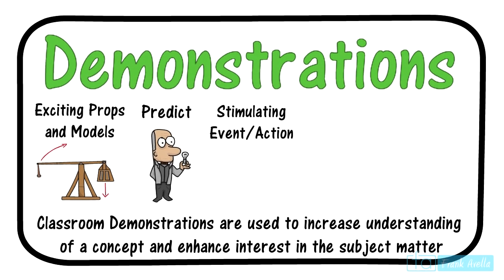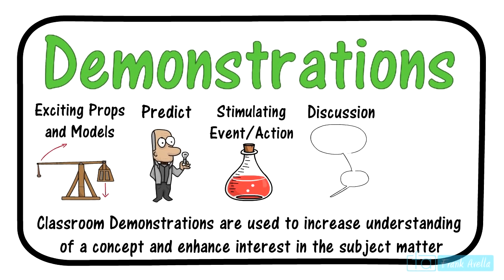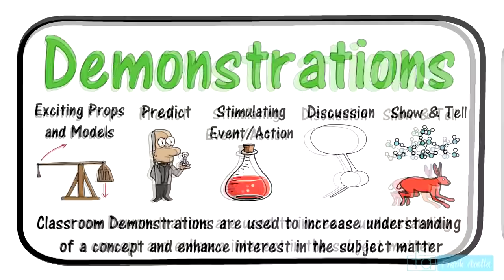There should be some sort of an action — an acid-based solution changing colors is an example, or something as easy as flying a paper airplane across the room. All demonstrations can be followed up with a discussion. Ask probing and thought-provoking questions that require students to analyze and make sense of what just took place. At the elementary level, students are requested to bring in their own props — show and tell, for example. Students may present live animals, objects from their cultural backgrounds, or even projects they have made, like a model science experiment.